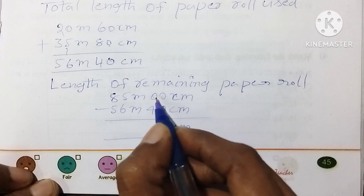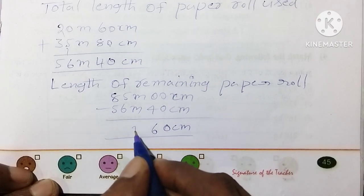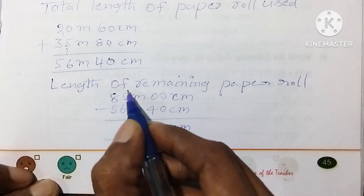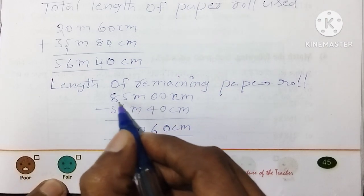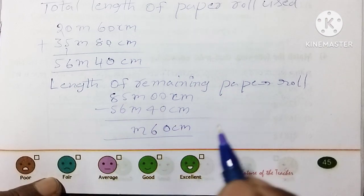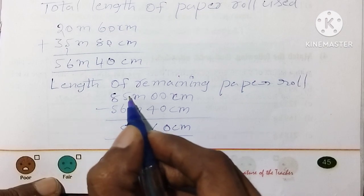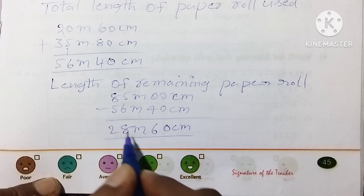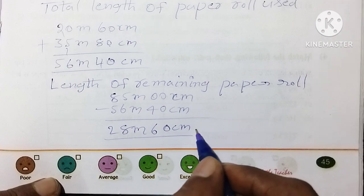10 minus 6 is 4, carry gives 14 minus 6 is 8, and 7 minus 7 is 0, giving 28 meters 60 centimeters remaining.